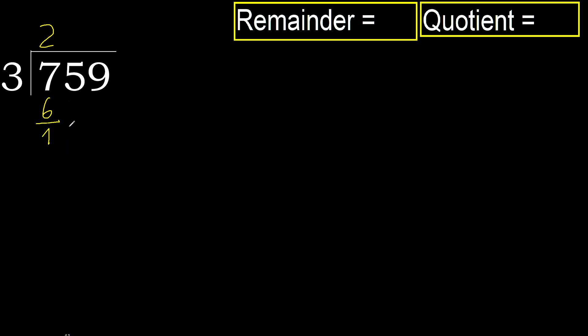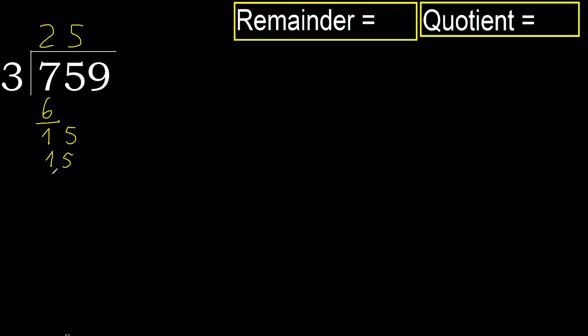Next. Bring down: 15. 3 multiplied by 6 is 18, which is greater. Multiply by 5: 3 multiplied by 5 is 15, which is not greater. Subtract.